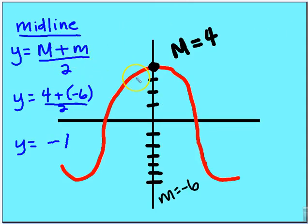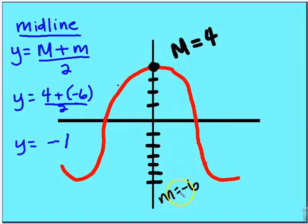The midline is the line between the peak and trough of the periodic function. We find it by taking the average of the maximum and minimum height. The midline equation is y equals M plus m over 2. Here, uppercase M is 4 (the peak) and lowercase m is negative 6 (the minimum). So 4 plus negative 6 equals negative 2, divided by 2 equals negative 1. The midline is y equals negative 1.